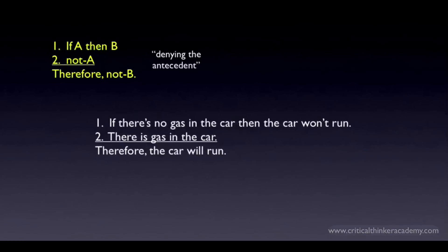This still has the form of denying the antecedent: if A then B, not A, therefore not B. But the antecedent A is already a negation. So by denying the antecedent, you're saying it's not the case that there's no gas in the car, which just means that there is gas in the car. This one is obviously invalid too — the fact that there's gas in the car in no way guarantees that the car is going to run.